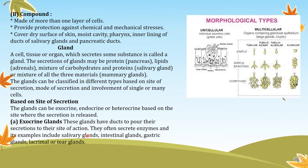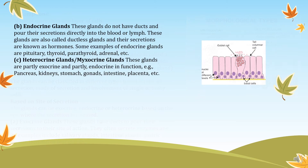Exocrine gland examples include the liver, salivary glands functioning in the buccal cavity, intestinal glands, gastric glands, and lacrimal or tear glands present in our eyes. These are different types of unicellular and multicellular glandular cells performing different functions in the body. Endocrine glands do not have ducts and pour their secretions directly into the blood or lymph. They are also called ductless glands, and their secretions are known as hormones — as discussed in the control and coordination chapter.